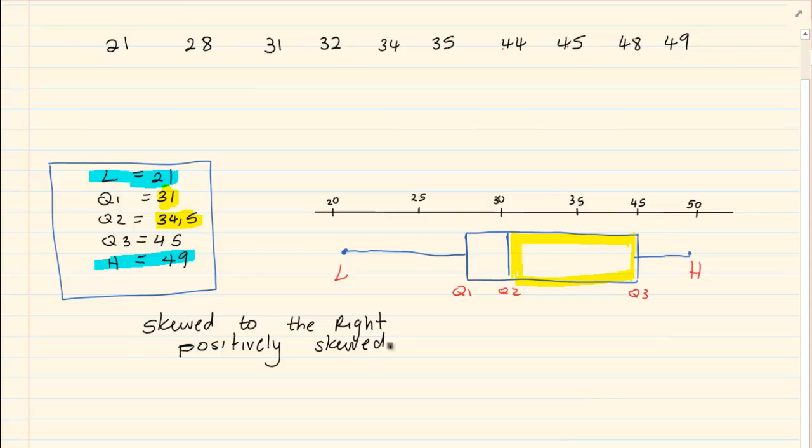Sometimes the data can be very deceiving. Ninety percent of the time, if you look at it the way I had just done it now, it would be correct. But, if you want to be hundred percent certain, for it to be skewed to the right, the mean must be greater than the median.